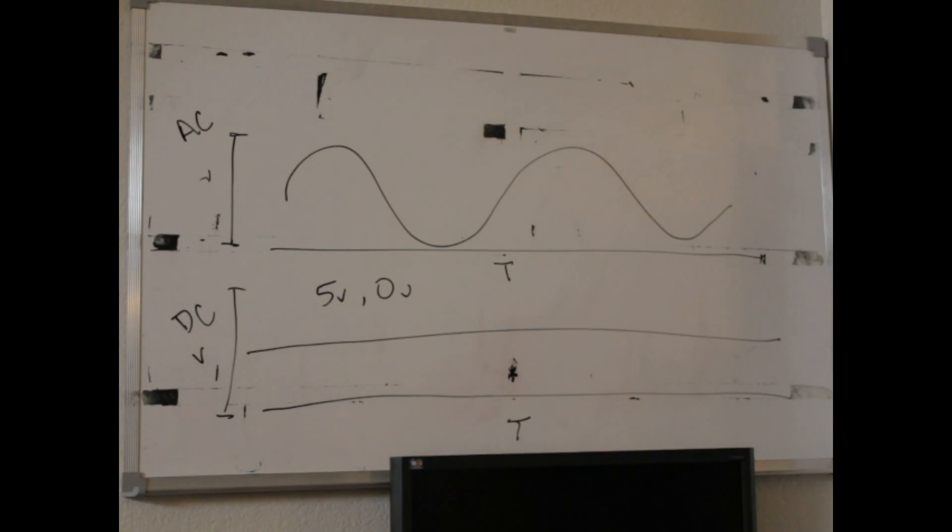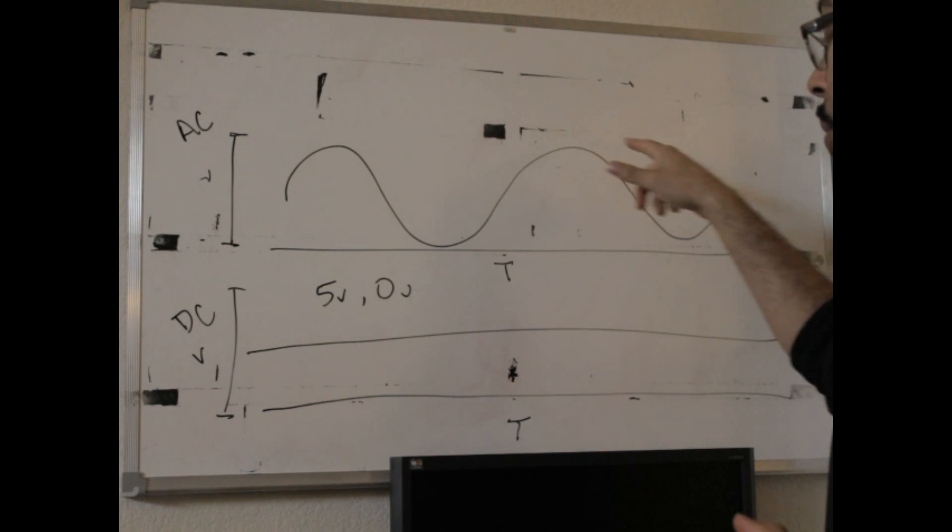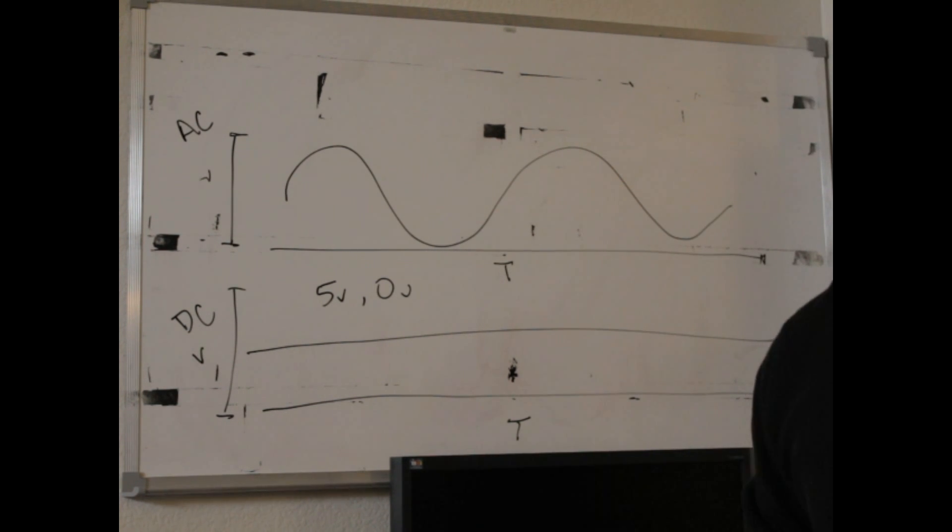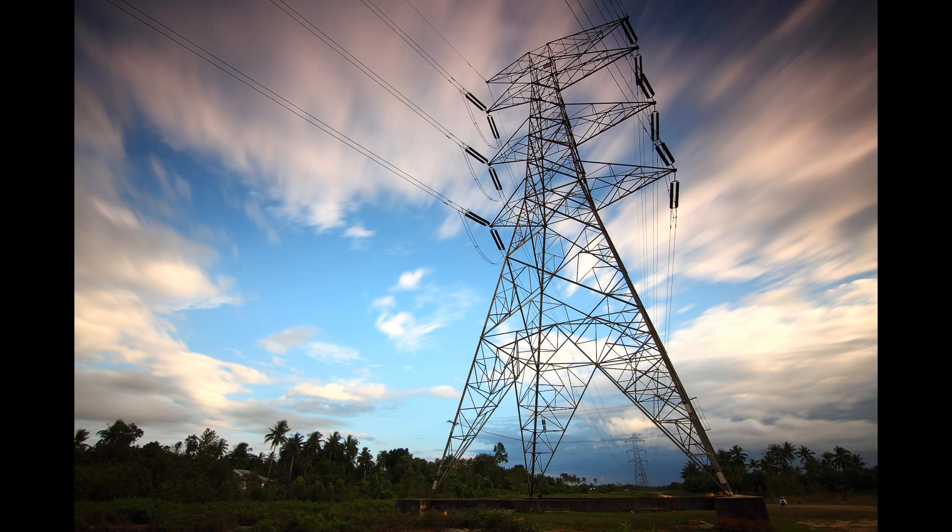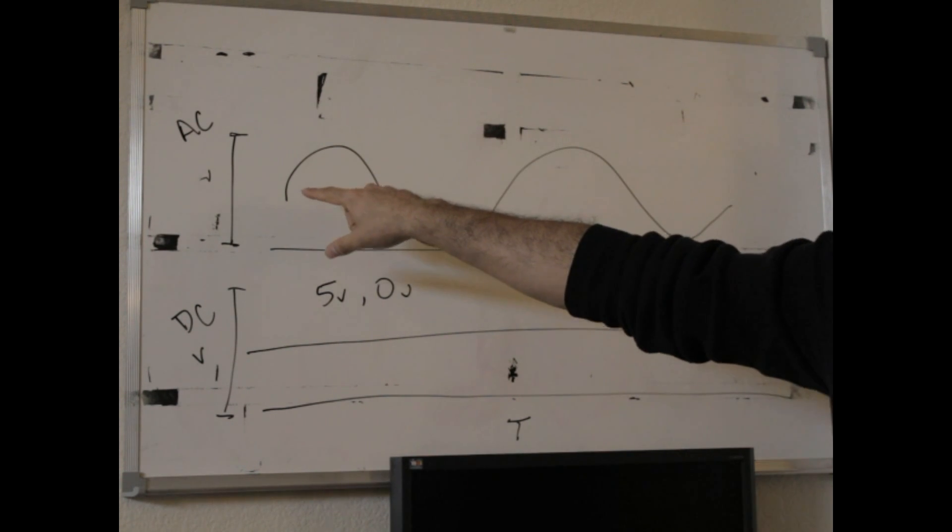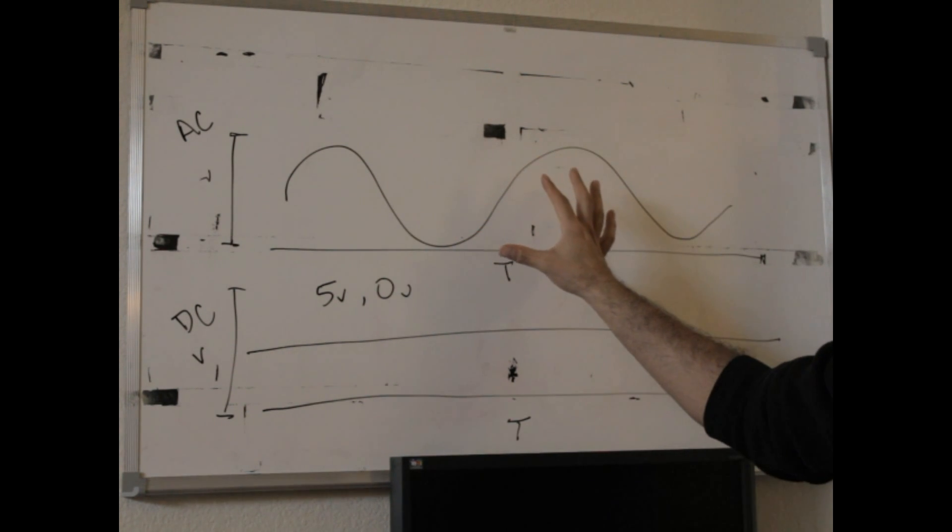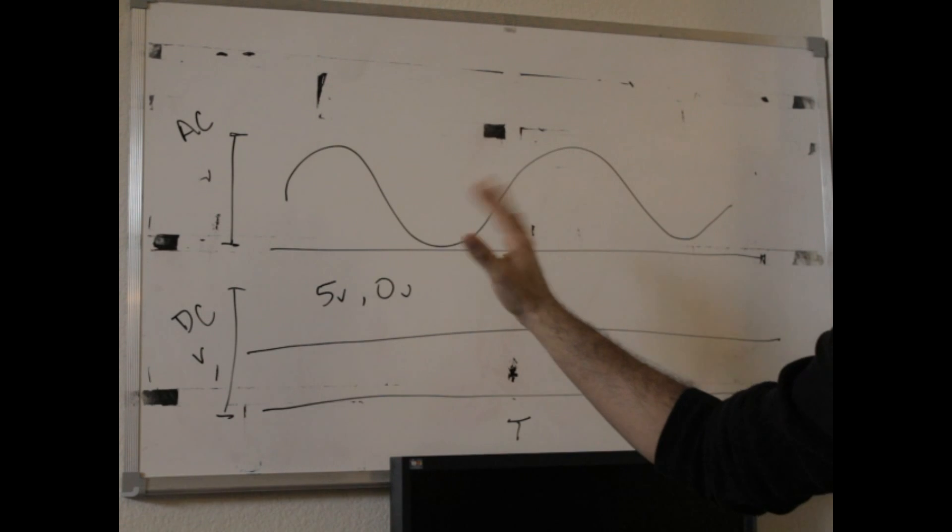AC, on the other hand, with its alternating waveform, is going to be more synonymous with higher-end appliances, things that use a lot of power, and also electric delivery. In your wall sockets at your house, electricity is delivered via alternating current because alternating current has some properties that allow it to travel further.